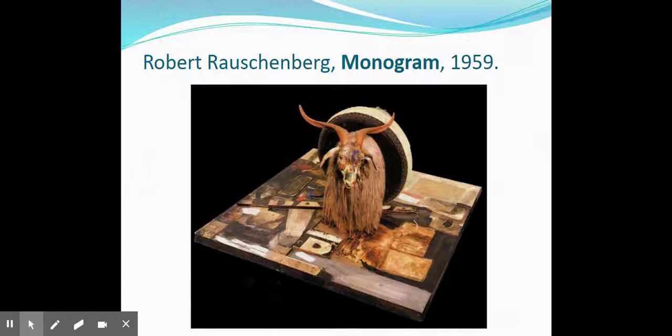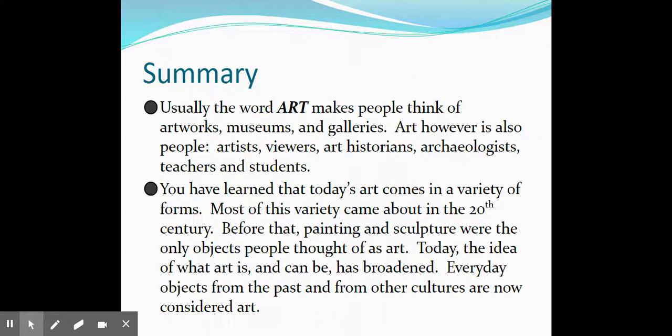This mixed media piece by Robert Rauschenberg is called Monogram, made in 1959. It's mixed media because the artist used several different mediums to produce the work. It's a very unique piece and you will find this artwork in most art history or art appreciation books.